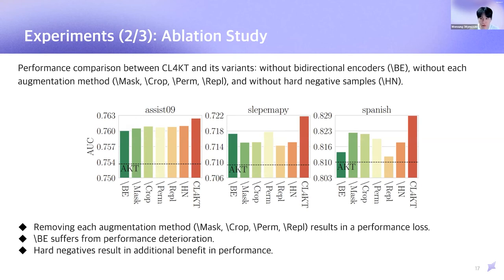From the previous research, a natural question can arise. Which components of CL4KT play an important role in performance? To answer that, this shows the ablation study of our model. In order to verify the impact of each component, we compare CL4KT with six variants, consisting of one without bidirectional encoders, one without each augmentation method, and one without hard negative samples. This figure shows the following interesting observations. First, regarding data augmentation method, removing each augmentation method results in the performance loss, which is empirical evidence for the effectiveness of using multiple augmentation methods together. This result is consistent with previous work, SimCLR.